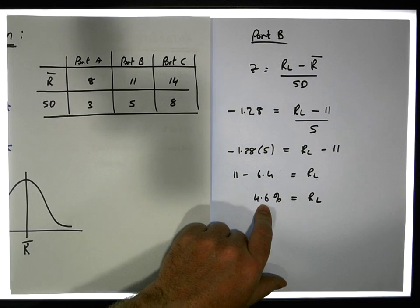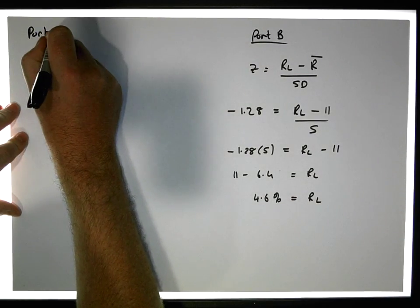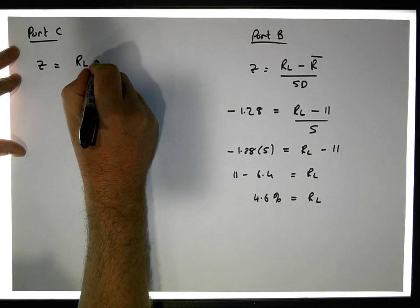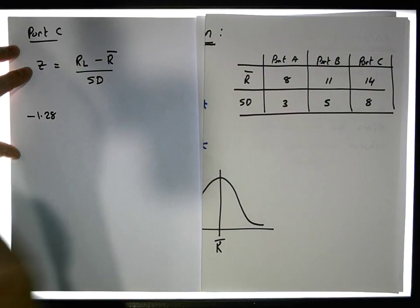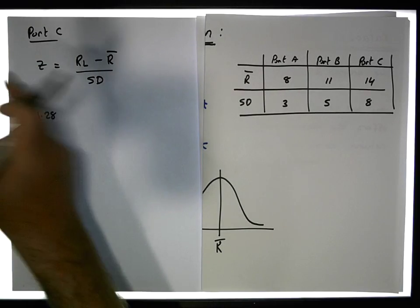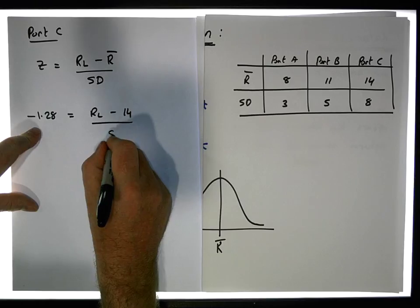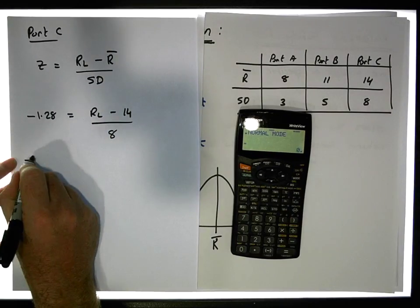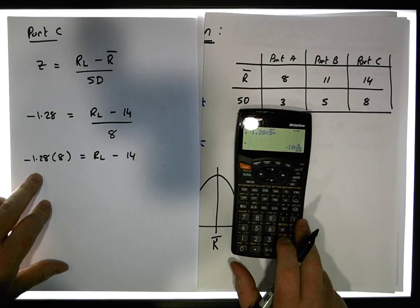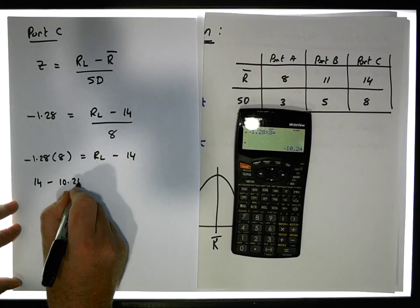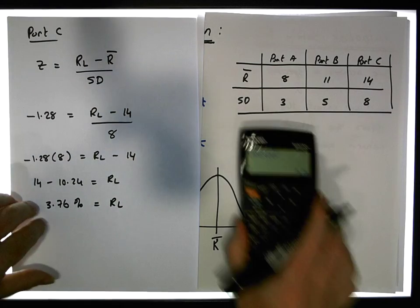For Portfolio C, z equals the minimum return level minus the expected return divided by the standard deviation. Again, z is minus 1.28, which has 10% of the area to the left-hand side. So minus 1.28 equals RL minus 14% divided by a standard deviation of 8. Multiplying across: minus 1.28 times 8 equals RL minus 14, giving minus 10.24. Bringing the 14 across: 14 minus 10.24 gives RL equals 3.76%.